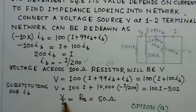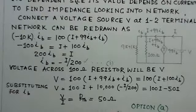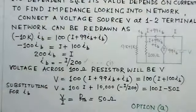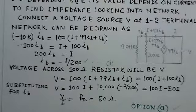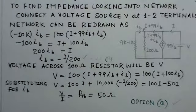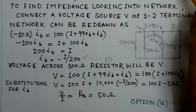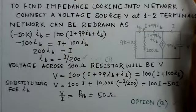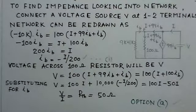The resistance looking into the network — that is the Thevenin equivalent of the network — is 50 ohms. This corresponds to option A. This is a quite simple problem, but it involves a dependent current source. You can similarly solve problems having dependent current or voltage sources, or both kinds of sources. Thank you.